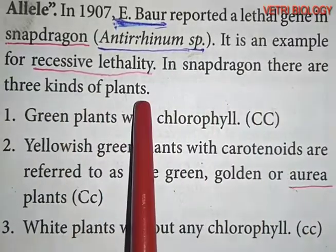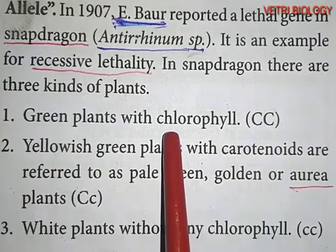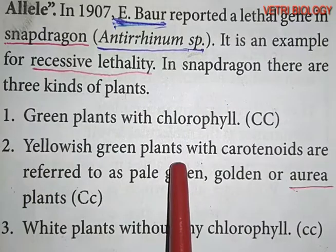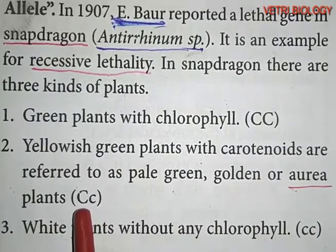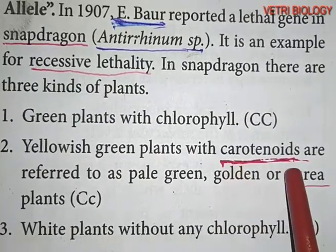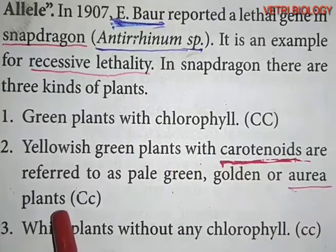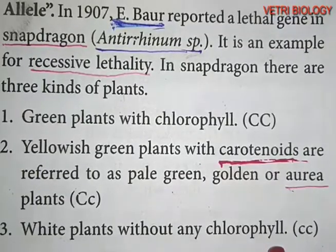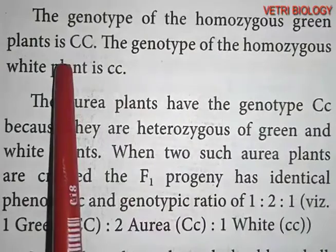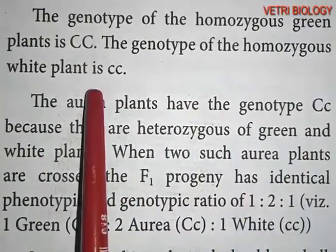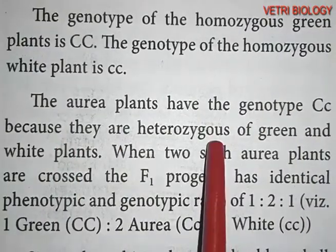In snapdragon, there are three kinds of plants. The first is green plants with chlorophyll, with genotype CC. The second is yellowish-green plants with carotenoids — referred to as pale green, golden, or aurea plants — with genotype Cc. The third type is white plants without any chlorophyll, with genotype cc. When two aurea plants (Cc) are crossed, the F2 progeny has a phenotypic and genotypic ratio of 1 green (CC) : 2 aurea (Cc) : 1 white (cc).